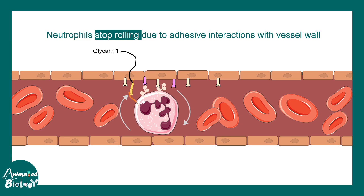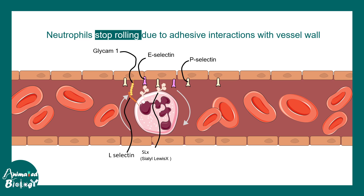One of those adhesion molecules is GlyCAM-1, present on blood vessel capillary endothelial cells, along with E-selectin and P-selectin — all adhesion molecules on the endothelial cells. On the neutrophil surface are L-selectin and Sialyl-Lewis X (SLX). These adhesion interactions work like velcro, preventing the neutrophil from rolling rapidly and allowing it to stop.